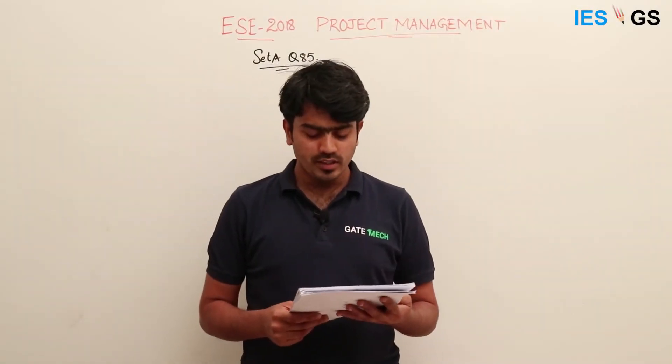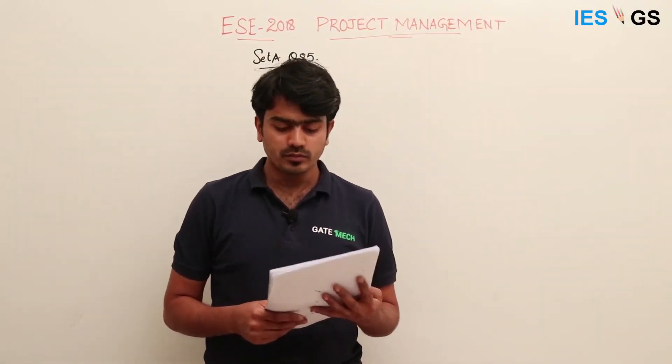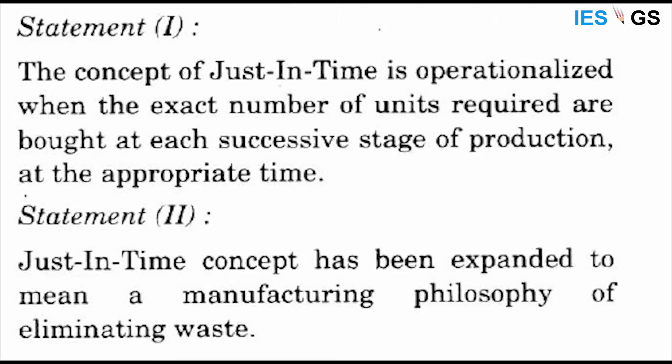The next question is number 85, again based on statements. You need to determine whether both statements are true and statement two is the correct explanation of statement one. Statement one is: the concept of just-in-time is operationalized when the exact number of units required are bought at each successive stage of production at the appropriate time.